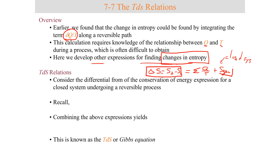By solving for S_gen in this second law balance, the entropy generated for a closed system equals the change in entropy of the system minus the sum of the heat transfer terms. So if the entropy change is greater than the entropy transferred to the system, the difference is attributed to entropy generated. This is for closed systems only — I haven't yet covered entropy transfer by mass.